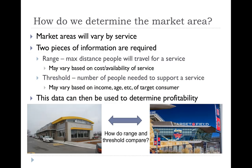Market areas vary by service, and Central Place Theory works at multiple levels — from individual businesses to entire cities. All businesses use range and threshold to figure out where to place their store. Range is the maximum distance people are willing to travel for a service, which varies based on cost and availability. Threshold is the number of people needed to support that service, which varies based on the income, age, and target consumer of that product.